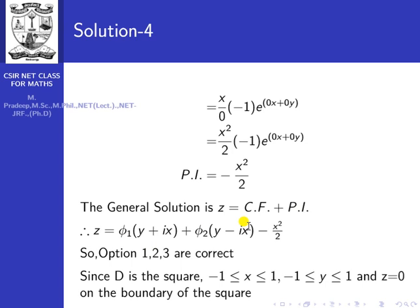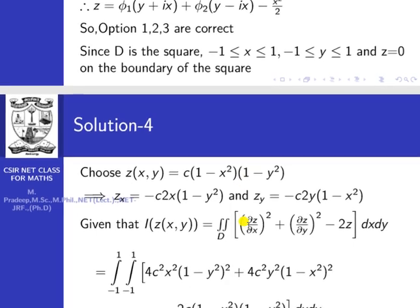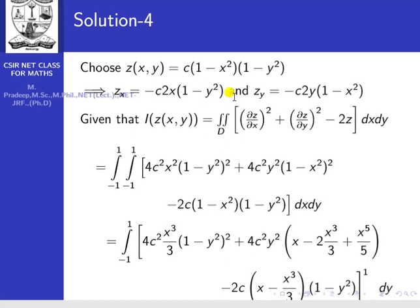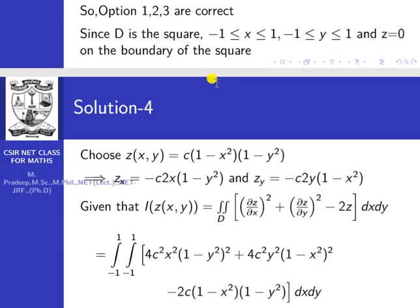So options 1, 2, 3 are correct. Now for option 4, we use the Ritz method to find an approximate solution. The domain is the square −1 ≤ x ≤ 1, −1 ≤ y ≤ 1, and z = 0 on the boundary of the square.